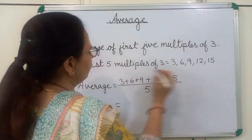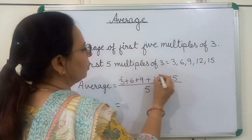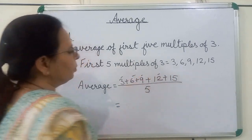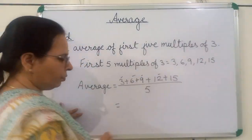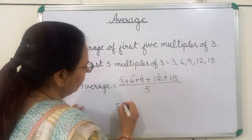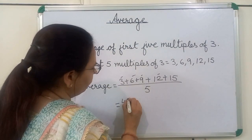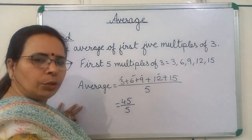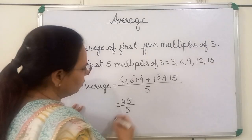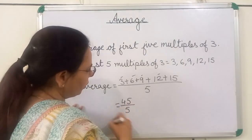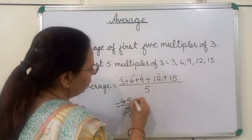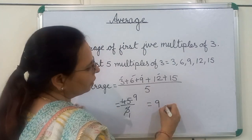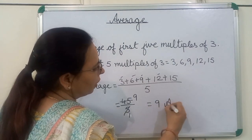Now, we will add these numbers: 3 + 6 + 9 + 12 + 15. We get 45 upon 5. Now, we will reduce this fraction: 45 divided by 5 gives us 9. We get the answer 9.